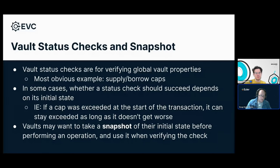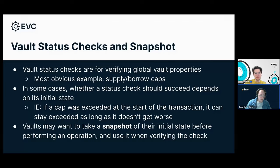Why do we have a vault status check — why is the vault checking itself? The reason is that sometimes you want to actually support a transient violation of a vault's invariant. The best example is supply and borrow caps for the vault — limits to how much can be deposited in or borrowed from a vault. It does not allow those to be exceeded. However, sometimes it's quite useful to actually temporarily exceed a cap as long as you solve it by the end of the transaction. Sometimes it's actually the change in global state that should be allowed or not, which is why we have a pattern called snapshotting.